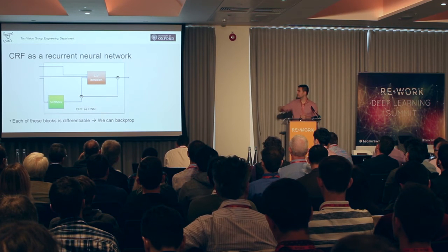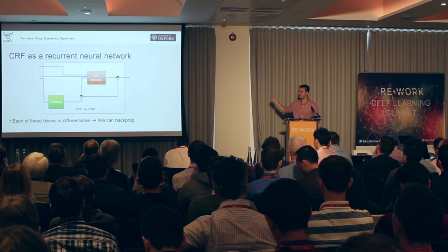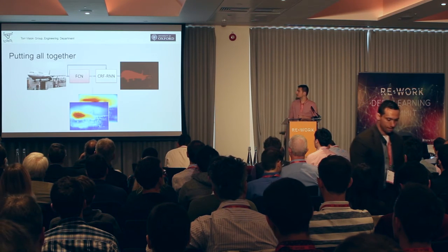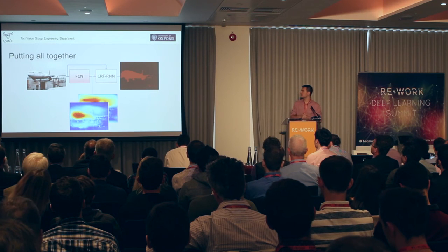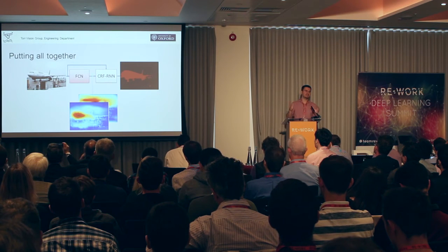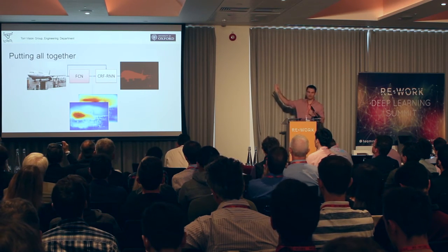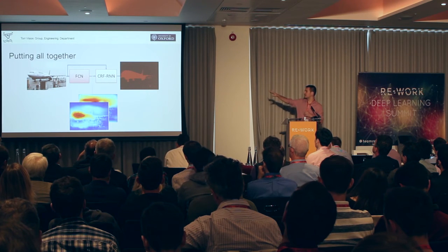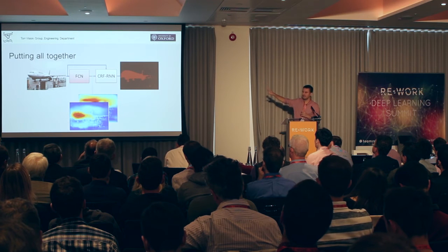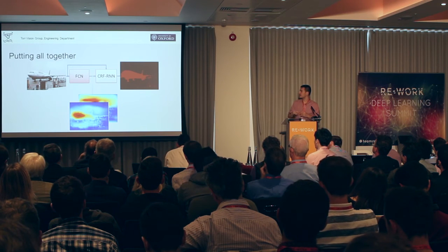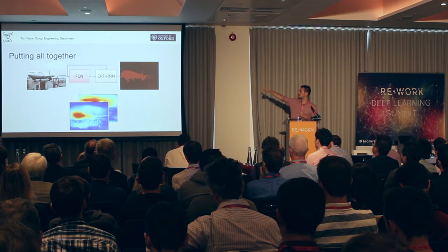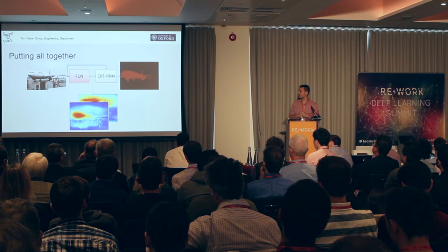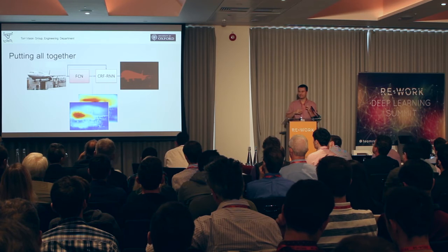All elements here are differentiable, so we can do backpropagation. Putting all pieces together: we start with a fully convolutional network, take the output of that as input to the conditional random field as an RNN, and we also introduce the original image into the CRF in order to calculate the bilateral filter. Finally, we get a prediction.